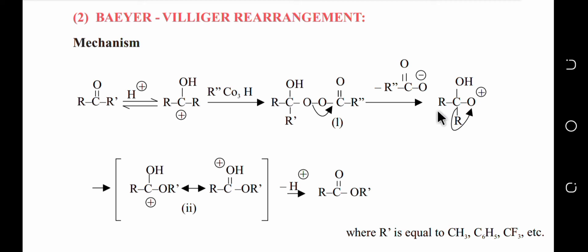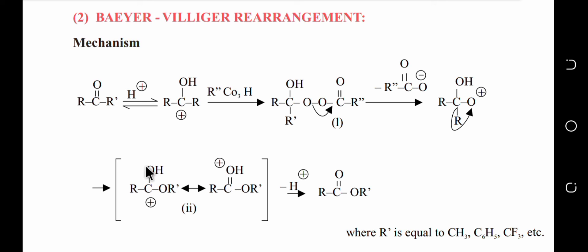To remove this instability, an alkyl shift occurs. The alkyl group shifts toward the oxygen, and the positive charge moves to the adjacent carbon. Since carbon is not electronegative, the structure becomes more stable. This positive charge on carbon is then resonance-stabilized: a lone pair from the oxygen shifts to form a double bond between carbon and oxygen, neutralizing the charge.